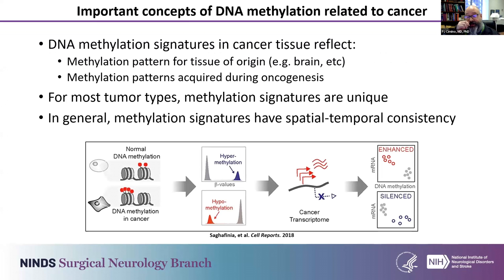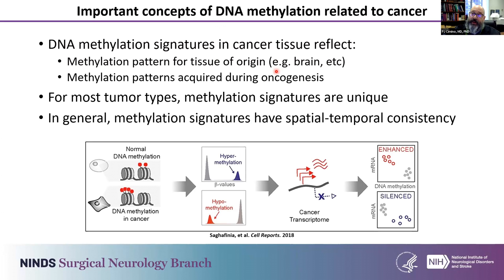DNA methylation signatures across the genome reflect two important distinctive features of cancer. One is the methylation pattern for the tissue of origin, such as brain, liver, or kidney. Then, as tumors go through oncogenic progression, they acquire certain patterns of methylation. For most tumor types, this leads to a unique genome-wide methylation signature that can be leveraged in diagnostic terms. There tends to be spatial and temporal consistency, both across recurrences of tumors and within tumors. There is some heterogeneity, and we can see some switching, but overall the epigenetics of these tumors tend to be stable, which really helps with our classification.